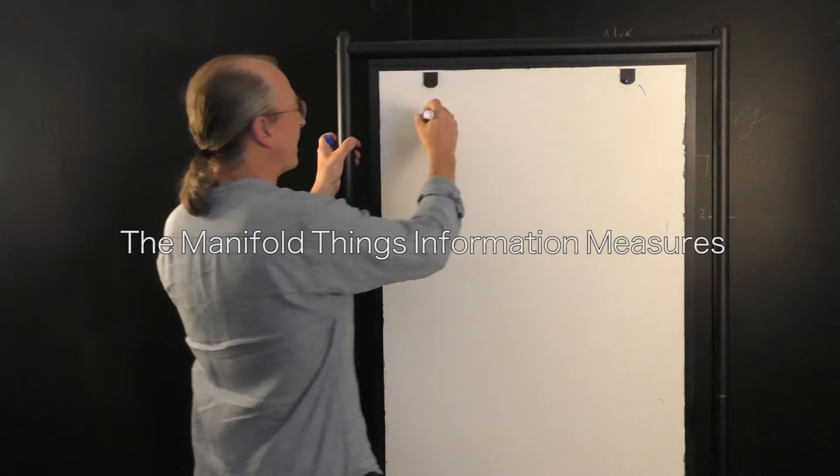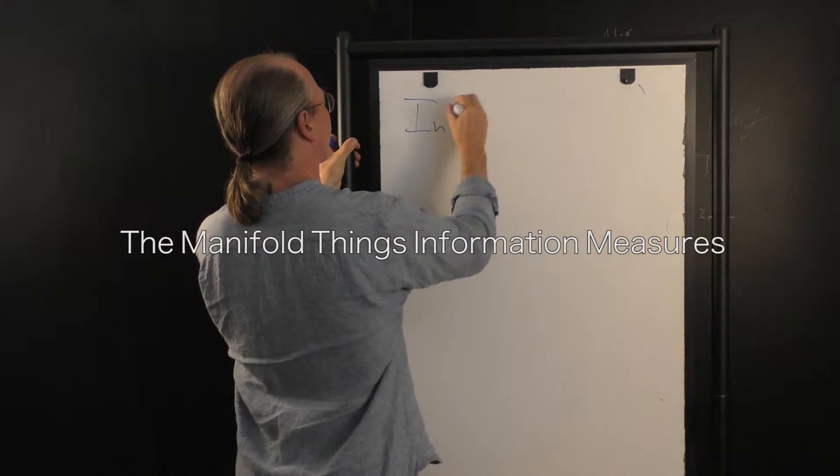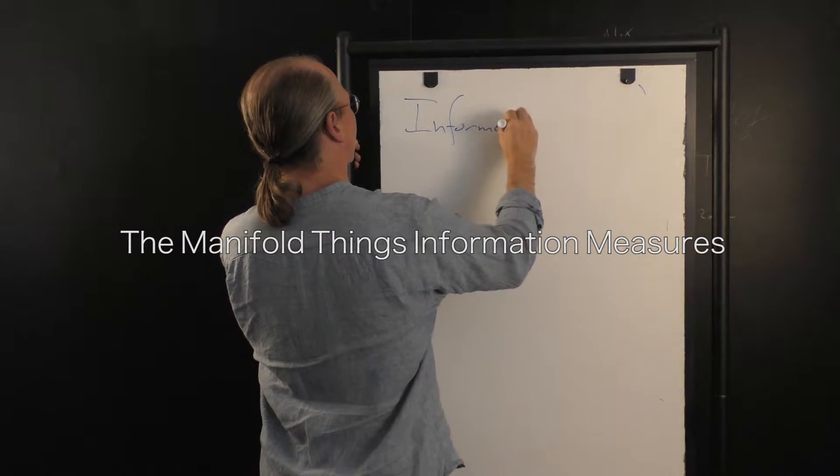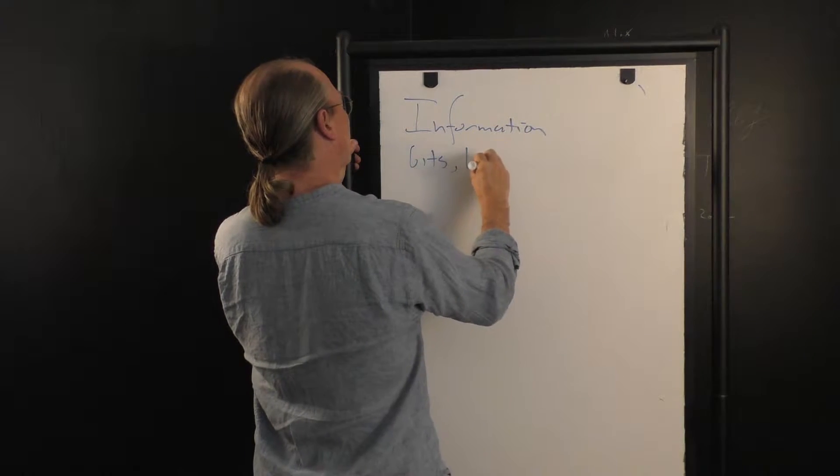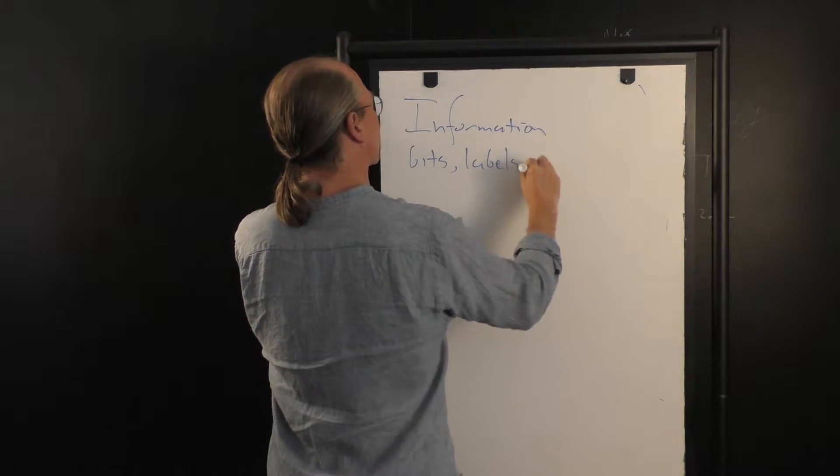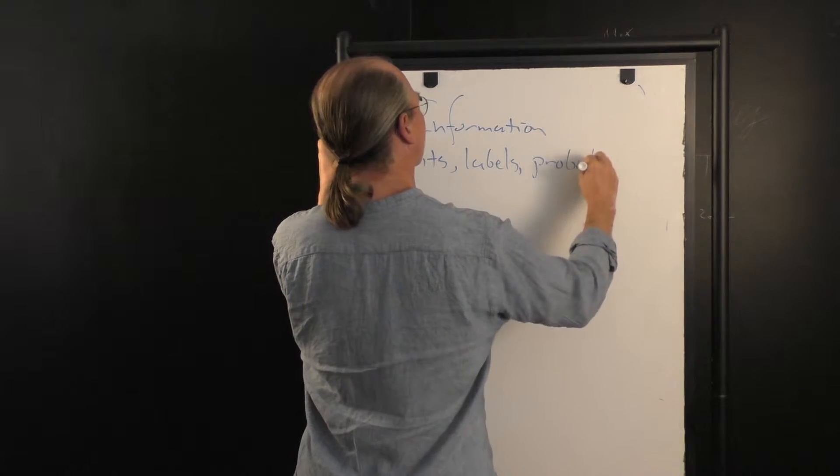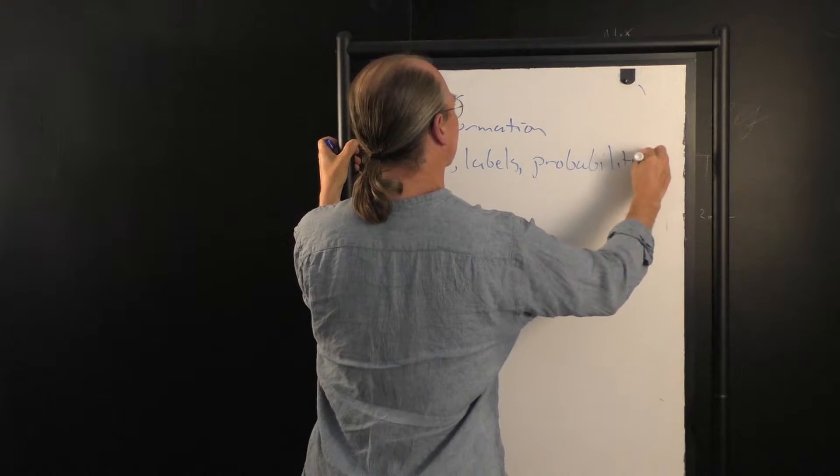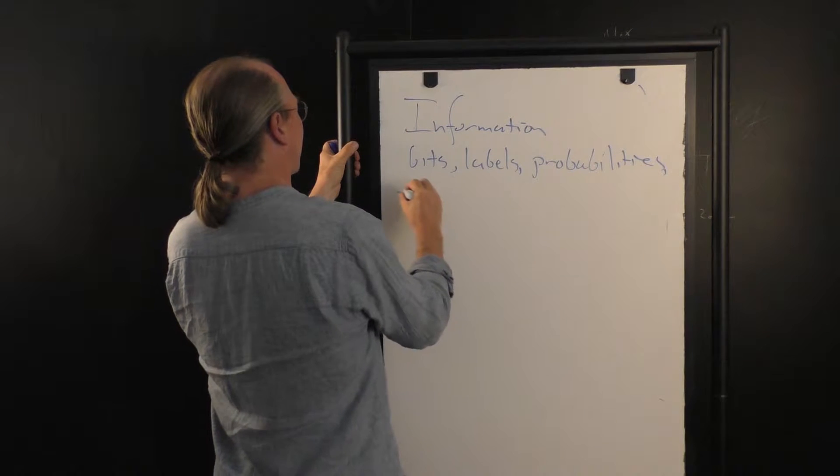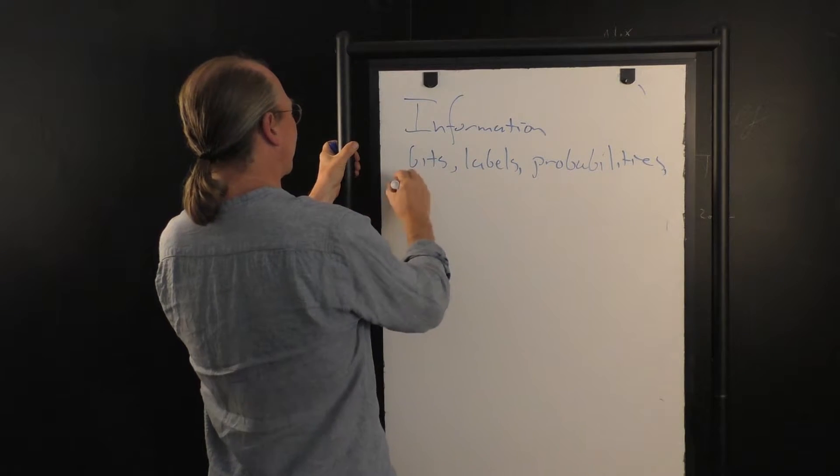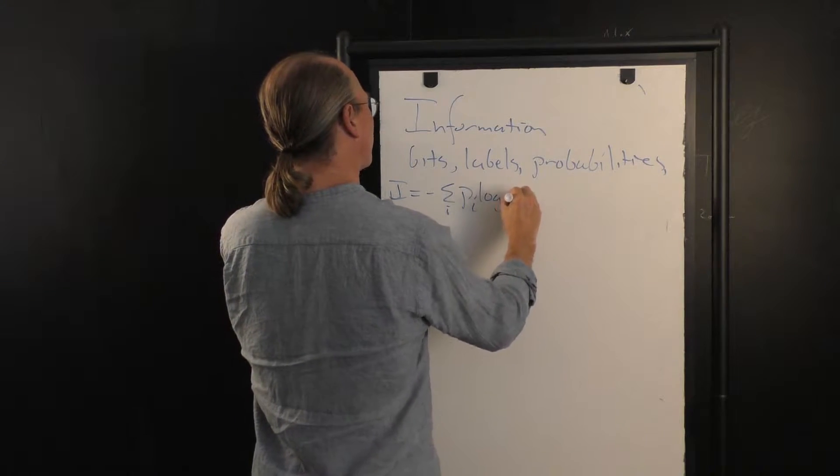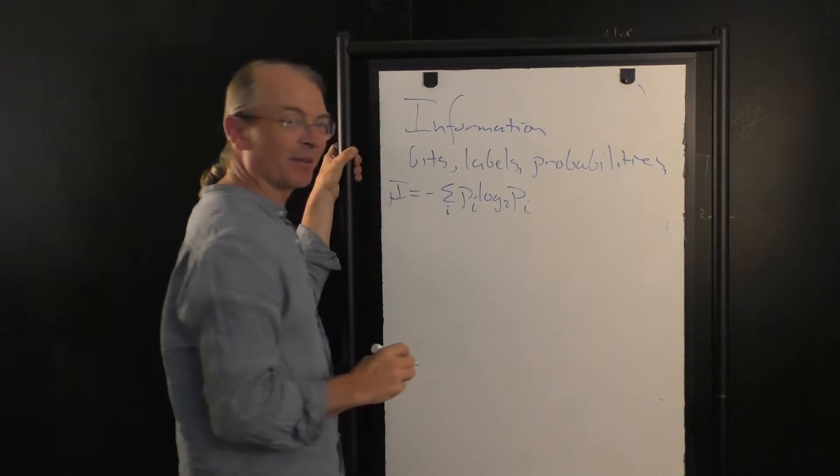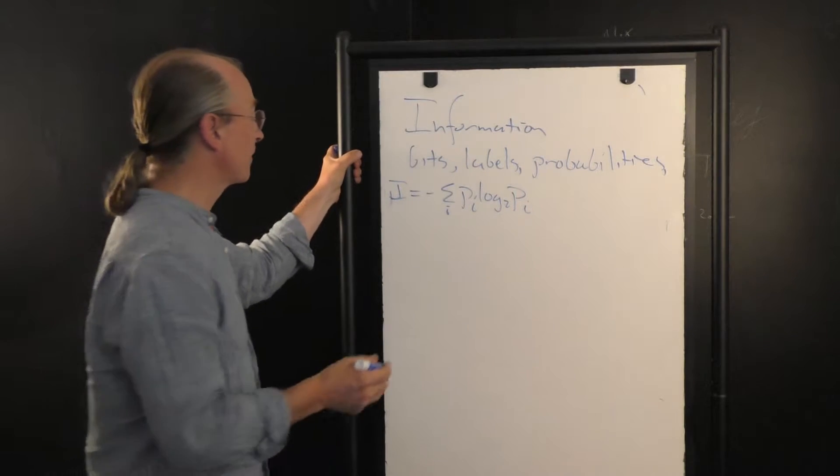I've told you a bit about information: bits, labels, probabilities. i is equal to minus the sum over i, p sub i, log to the base 2 of p sub i, the fundamental formula of information theory.